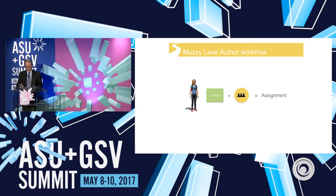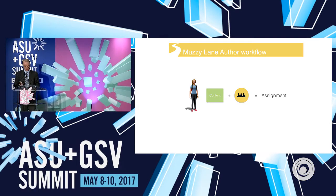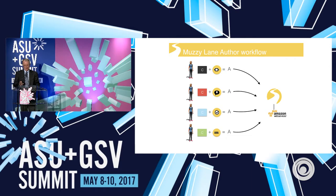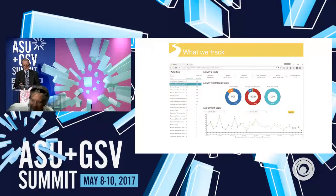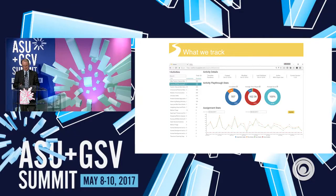To create an activity, you simply pick a chunk of content you want to game enable, then select an Author template to create an assignable activity or assessment. You can put as many or as few of these into any course as you wish, and we host them all on AWS. We track everything from time on task to number of attempts and completions to average scores — basically everything a partner needs.